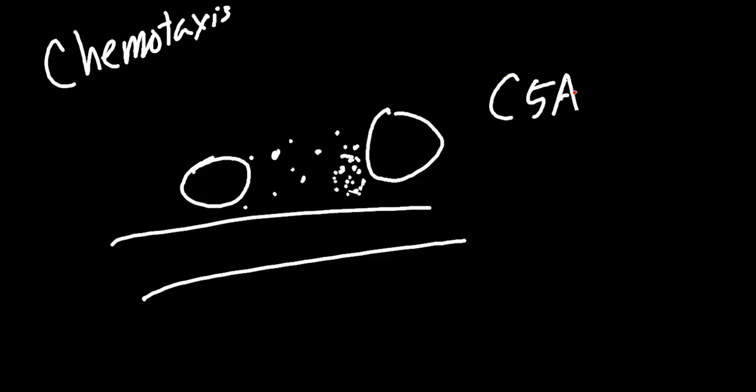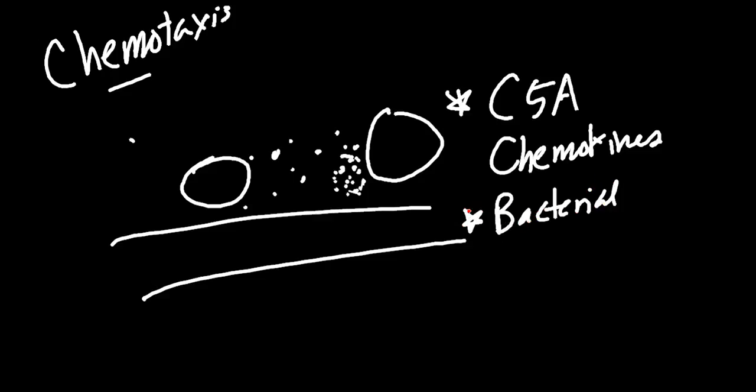What are some of the different chemotactic factors that we have? C5A is going to be a big one. I would star that if I were you. Also chemokines in general, chemokines, chemotaxis, chemokines, bacterial products another big one. And then also interleukin-8. And there's some other stuff, some minor stuff. I would know C5A. That is going to be your high yield chemotactic factor.